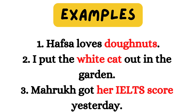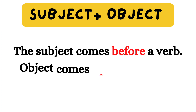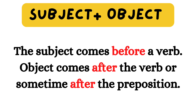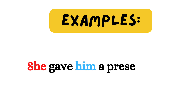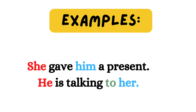We understood object. Now we will understand subject and object together. The subject comes before a verb. An object comes after the verb, or sometimes after the preposition. For example: she gave him a present. What action is performing here? Gave — gave is the verb. Who is performing the action? She — she is the subject that comes before the verb. Who is receiving the action? Him — him is the object, which is after the verb. Next: he is talking to her. He is the subject, to is a preposition, and her is the object. So sometimes a preposition comes before the object.